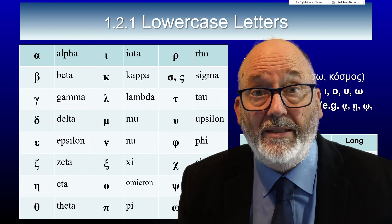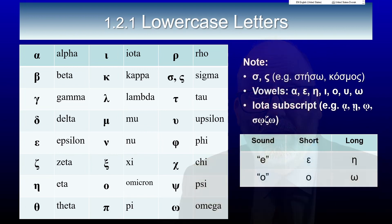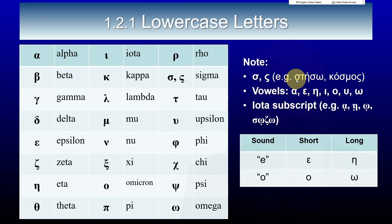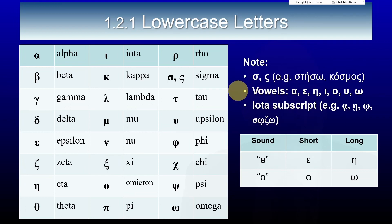Now let's look at some of these letters more closely. You will see that the letter sigma has got a regular form and a final form. For example, the word staso uses a sigma as the first letter and as the fourth letter — it's the regular sigma in both cases. The word cosmos, which means world or cosmos, uses a regular sigma in the third letter but uses the final sigma on the last letter.